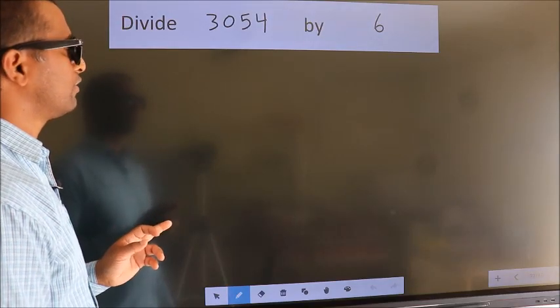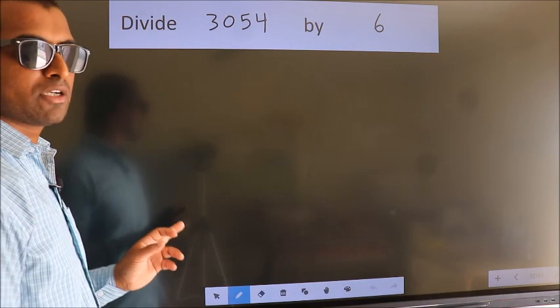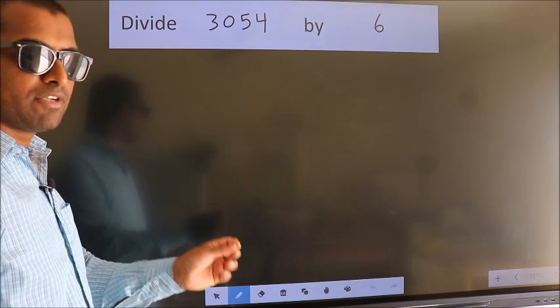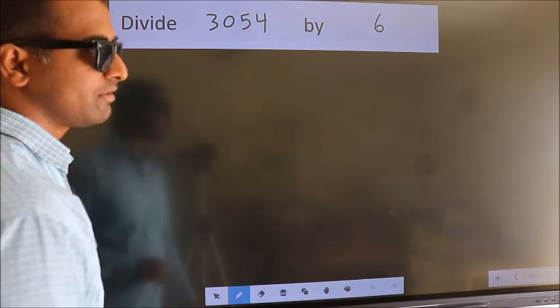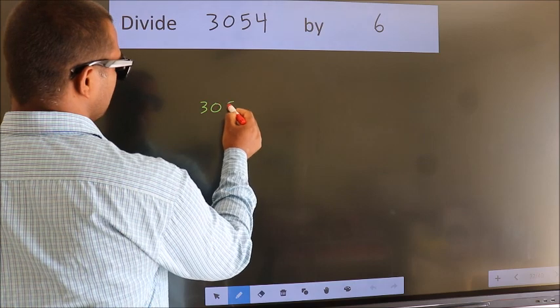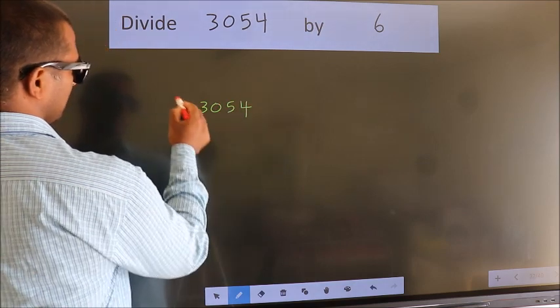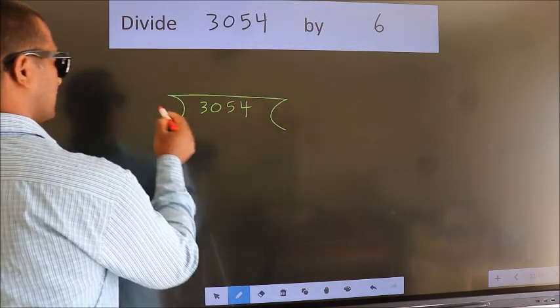Divide 3054 by 6. To do this division we should frame it in this way. 3054 here, 6 here.